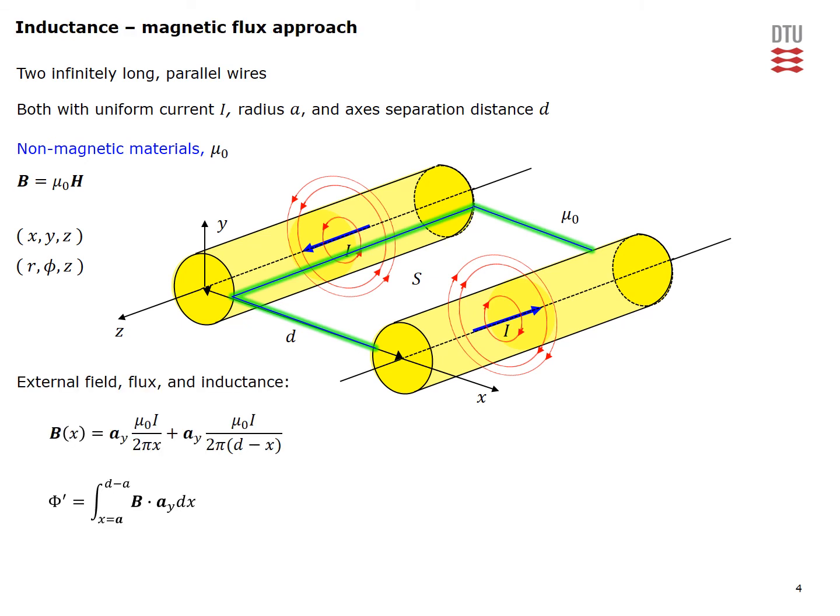This is the total B field. Here we have the field from the first wire, here we have the field from the second wire. This is the field that you will have to plug into this expression for the magnetic flux per unit length.